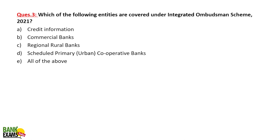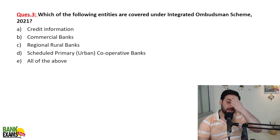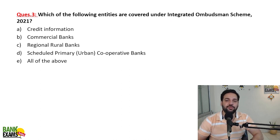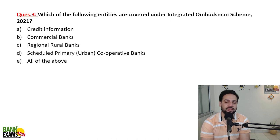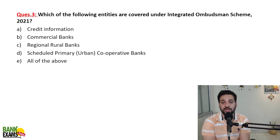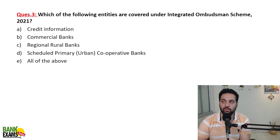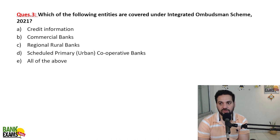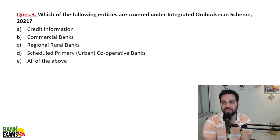Which of the following entities are covered under the Integrated Ombudsman Scheme? If you have a problem with a bank's service and you filed a complaint with the bank but did not get a solution, you can go to the RBI's Banking Ombudsman Scheme and register your complaint there to get a solution. RBI has now brought many financial institutions under the Integrated Ombudsman, which were previously handled separately.